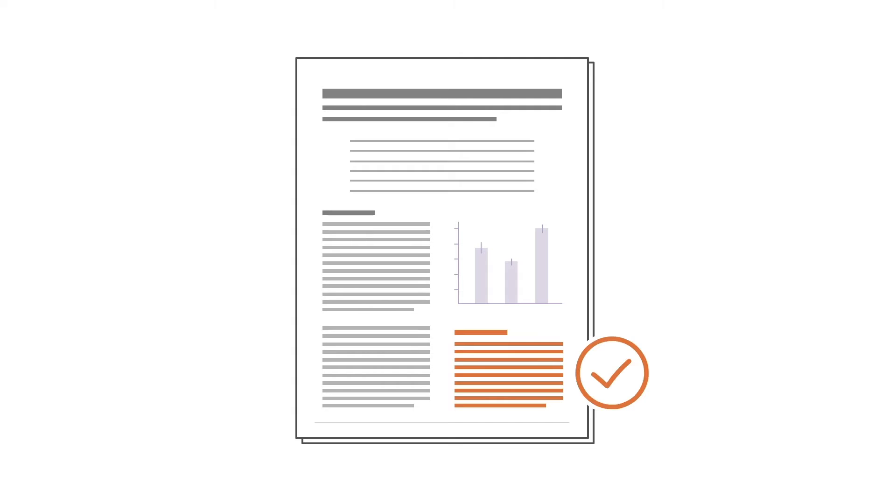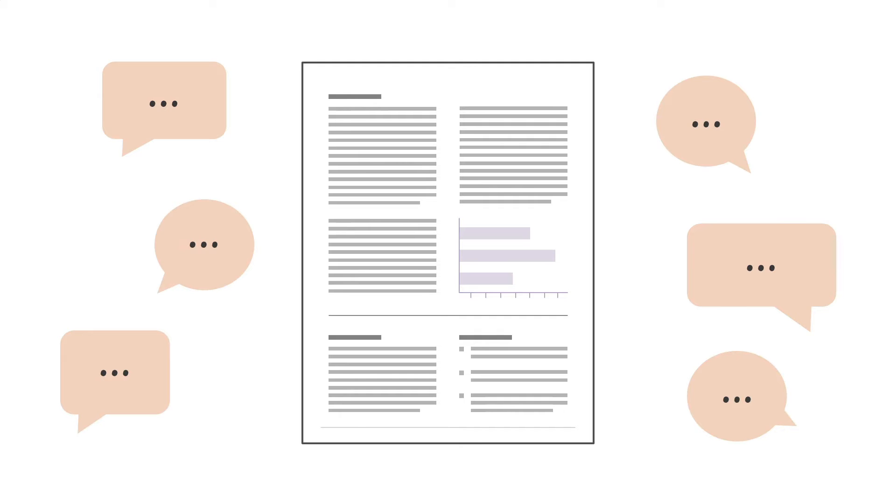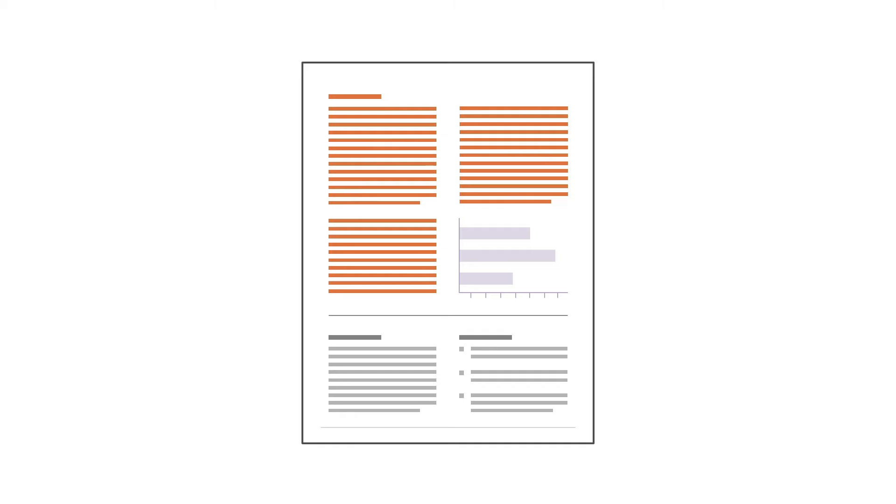Alright, with our methods nicely detailed, let's now move on to handling counterarguments in your writing. Counterarguments are typically incorporated into the discussion part of your paper. Incorporating them adds depth to your work and invites your reader into a thoughtful discourse. It shows that you've not only thoroughly researched your topic, but also considered differing viewpoints. However, when we're invested in developing an argument, it's often challenging to conceive strong counterarguments — that's where ChatGPT steps in.